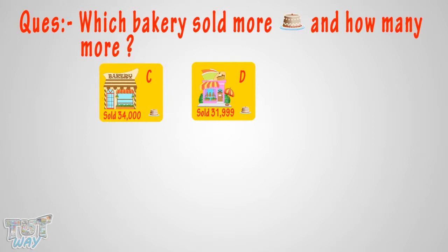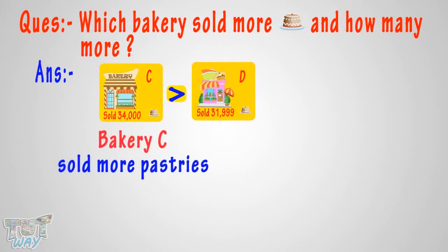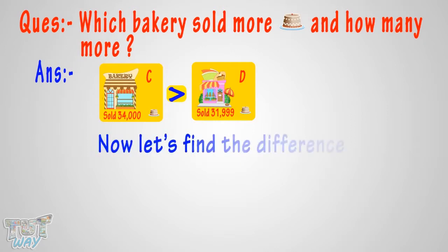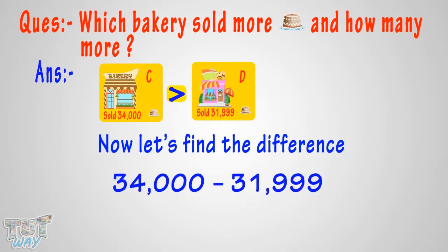Kids, let's answer the question. 34,000 is more than 31,999. So Bakery C sold more pastries. Now let's find out how many more — we have to find the difference. So subtract the smaller number from the bigger number.